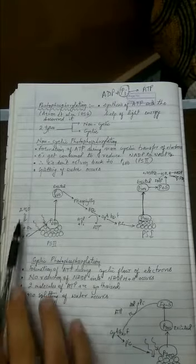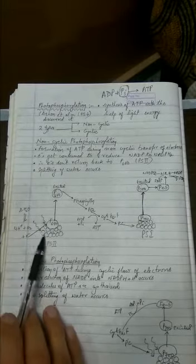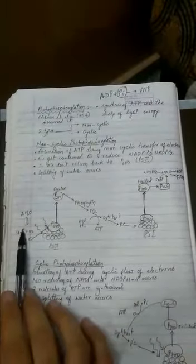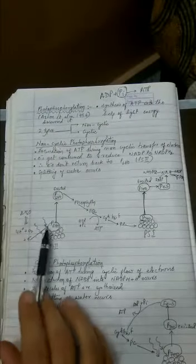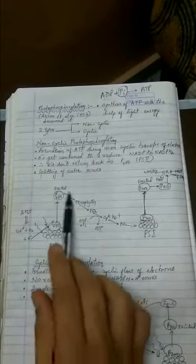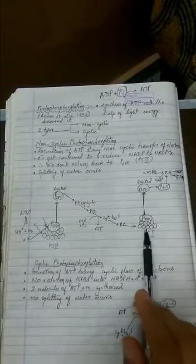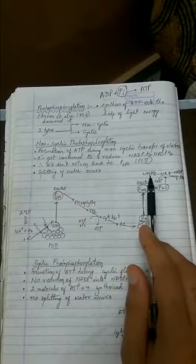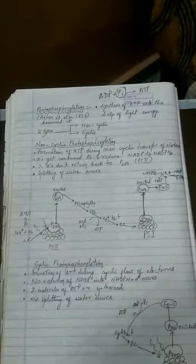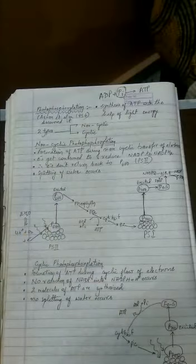Water molecule undergoes splitting to release electrons. Electron lost formed in the photolysis of water shifts to photosystem second. So water undergoes splitting to pass on electron to photosystem second. Second will pass on its electrons to first. And first will pass on its electron to NADP. That's why it is called as non-cyclic photophosphorylation.